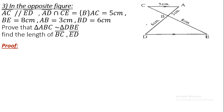To prove two triangles are similar, we need to prove there are two angles in the first triangle congruent to two corresponding angles in the other triangle. Since we have two sides that are parallel, we can look for Z-angles or F-angles.